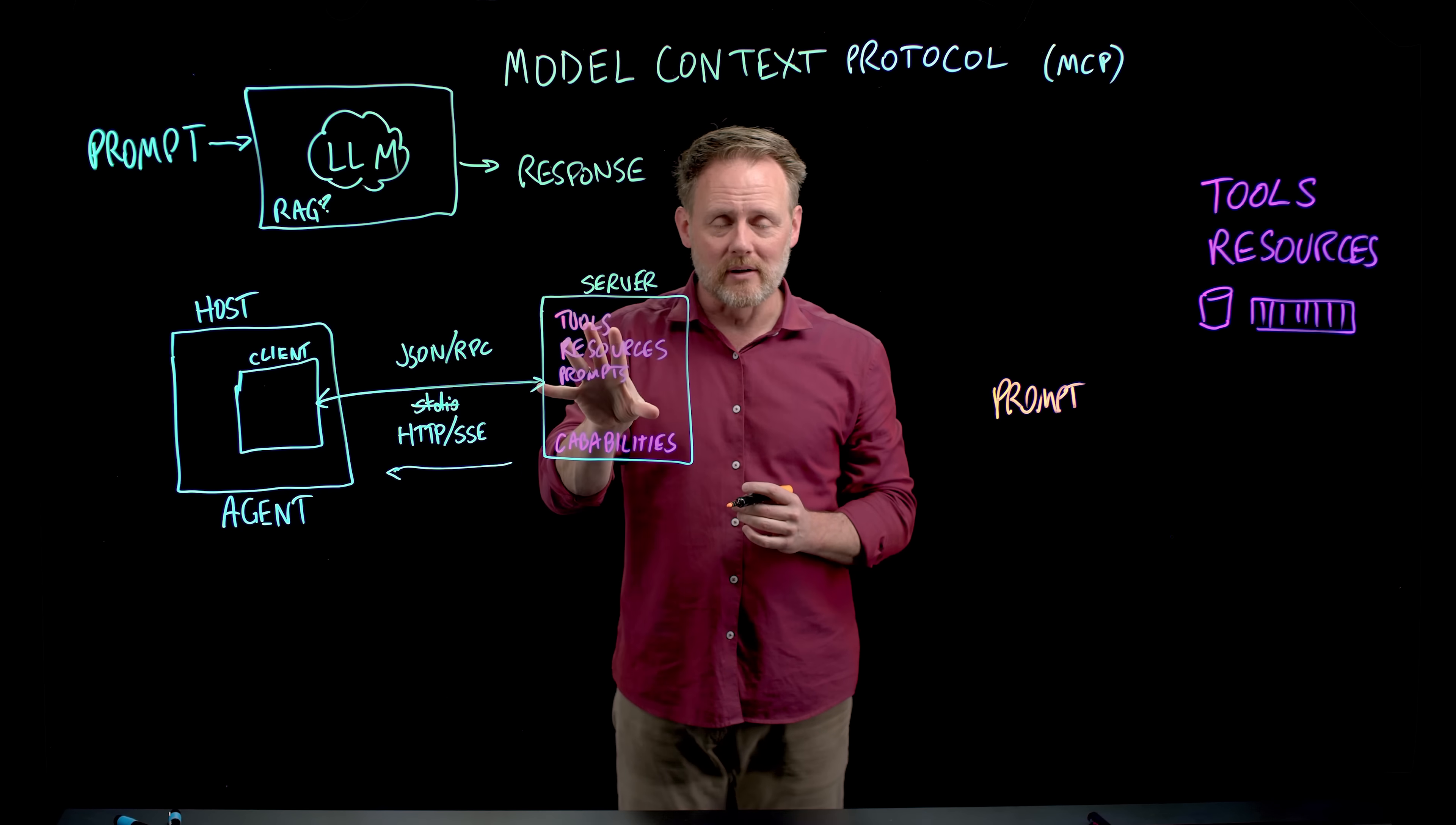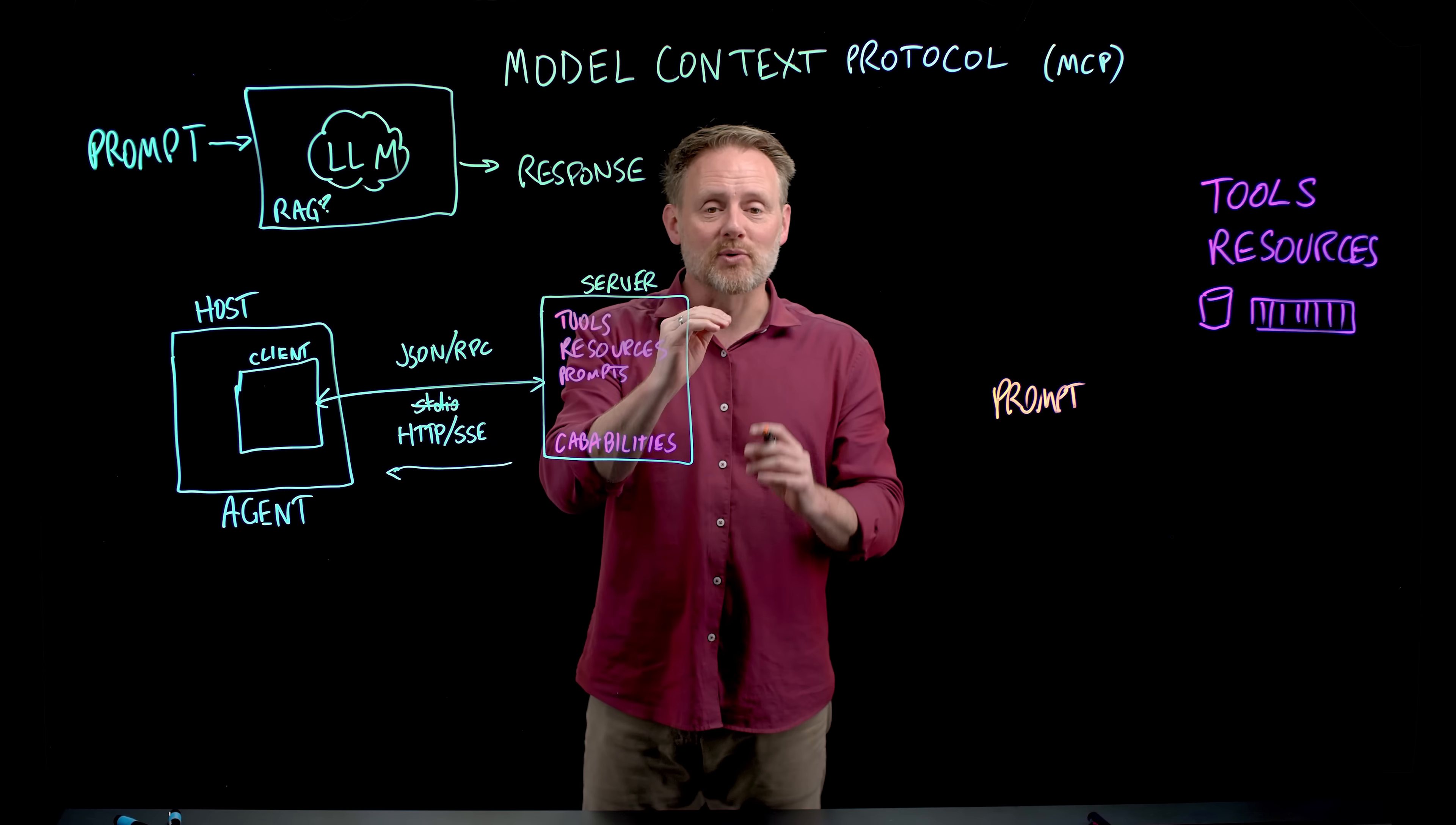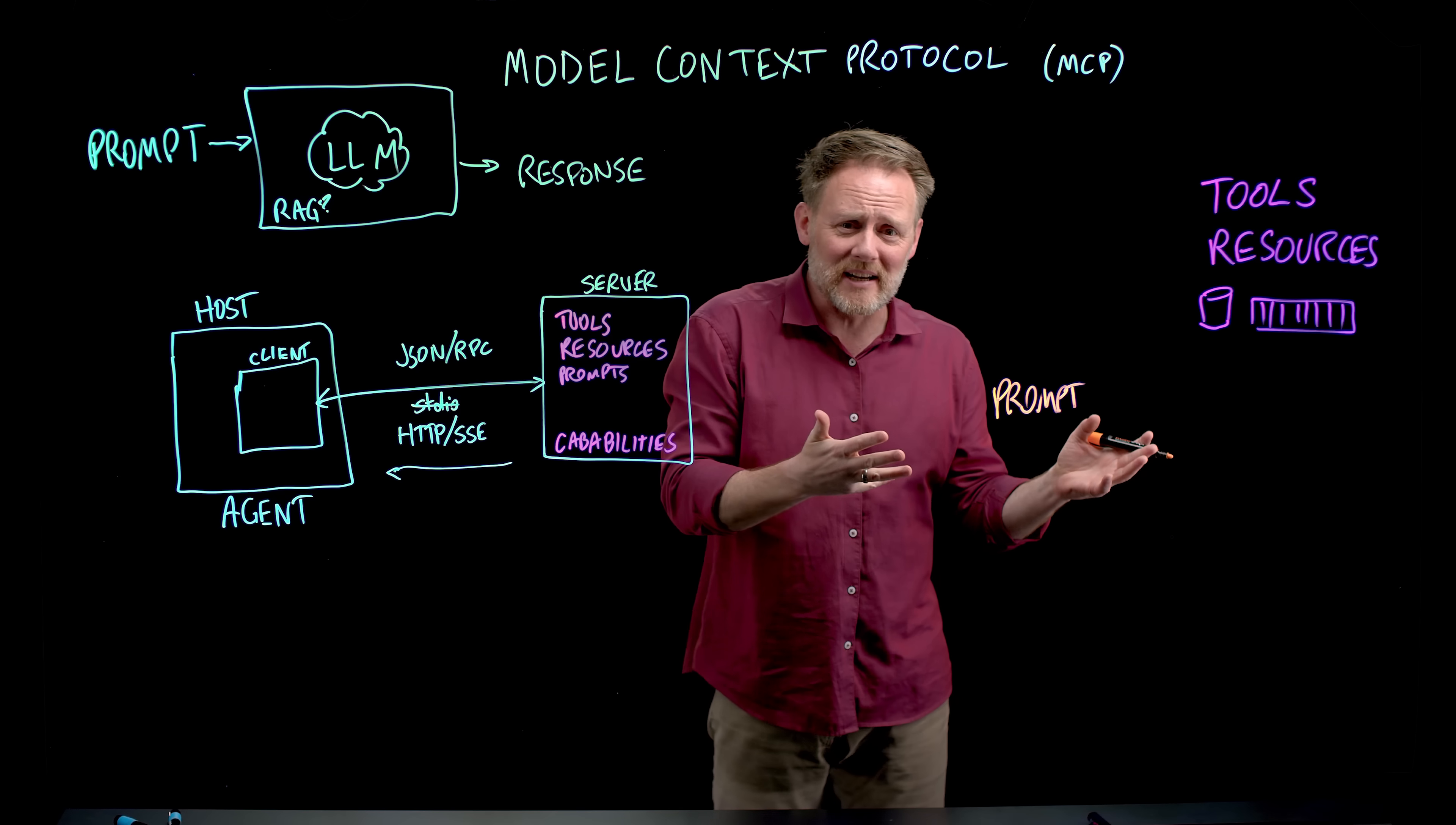And so it can interrogate the capabilities and see, oh, you have resources. Okay, let me get a list of your resources, which will include text descriptions of each resource. And it's important when writing the server, when building a server to make those good. I can take my prompt. I don't know. I'm just a poor little agentic application. I don't know how to figure out from the input whether I need any of those resources.